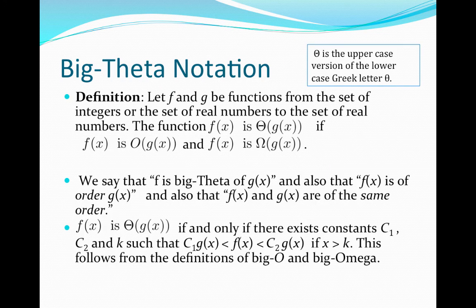Now that we have a notion of Big O notation and Big Omega notation, we are ready to look at the definition of Big Theta notation, which is a combination of Big O and Big Omega notation. Again, this is a property of functions. We let f and g be functions from the set of integers or the set of real numbers to the set of real numbers. Then f(x) is Big Theta of g(x) if f(x) is both Big O of g(x) and Big Omega of g(x).